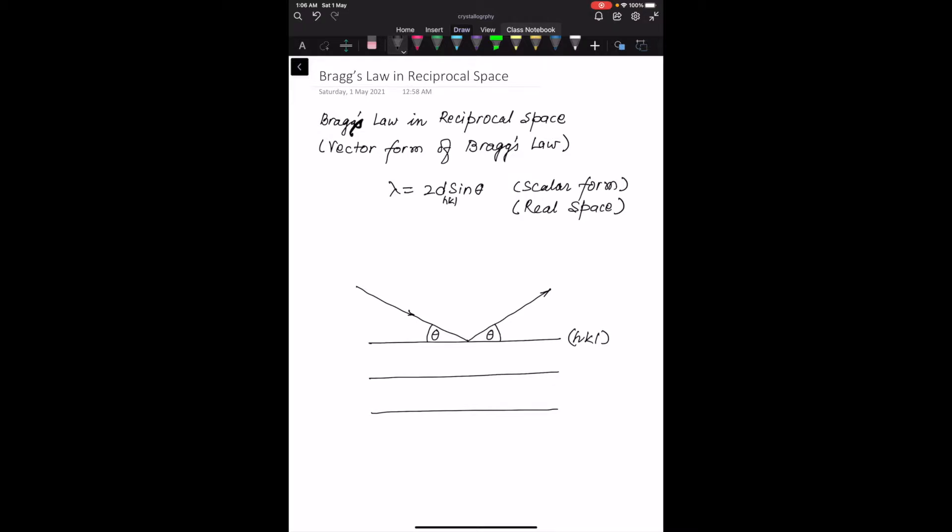they make equal angles with the plane. Both of these angles are theta, the incident angle and the angle of the diffracted wave. Let us call this an incident wave and this the reflected wave.